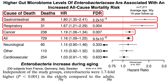As a double whammy, not only are relatively higher levels of enterobacteria associated with an increased all-cause mortality risk, they also increase during aging. Enterobacteria were found to be 1.7-fold higher in older adults at an average age of 75 years when compared with younger subjects at around 35 years. So the increase during aging, combined with having relatively higher levels, is associated with all-cause mortality risk.